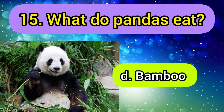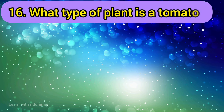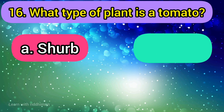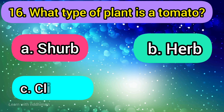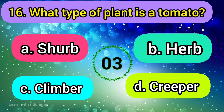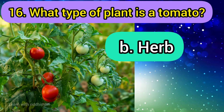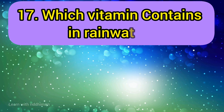What type of plant is a tomato? Sharp, herb, climber, creeper. Answer is herb.